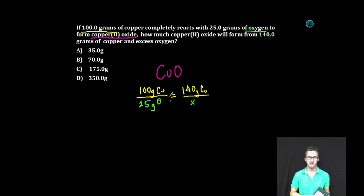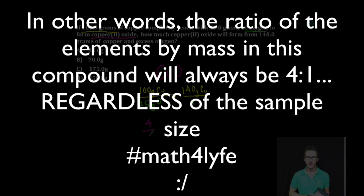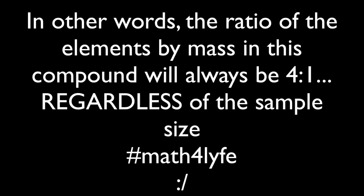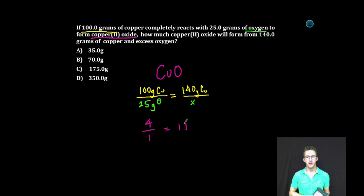Let's take a look at this side of the proportion. 100 over 25 can be simplified to 4 over 1 equals 140 over x. Using our mad algebra skills, we get 4x equals 140. Divide each side by 4, that'll tell us how much oxygen we need to completely react with 140 grams of copper.